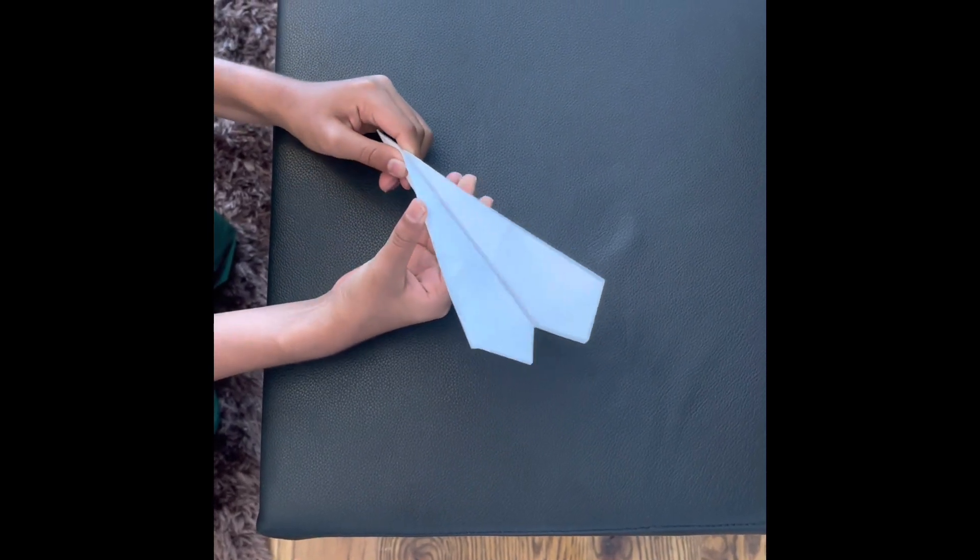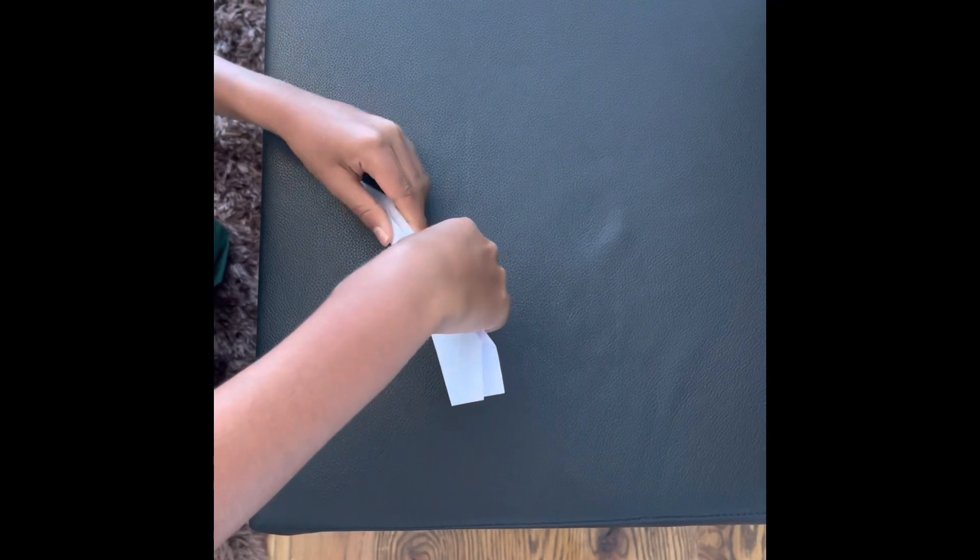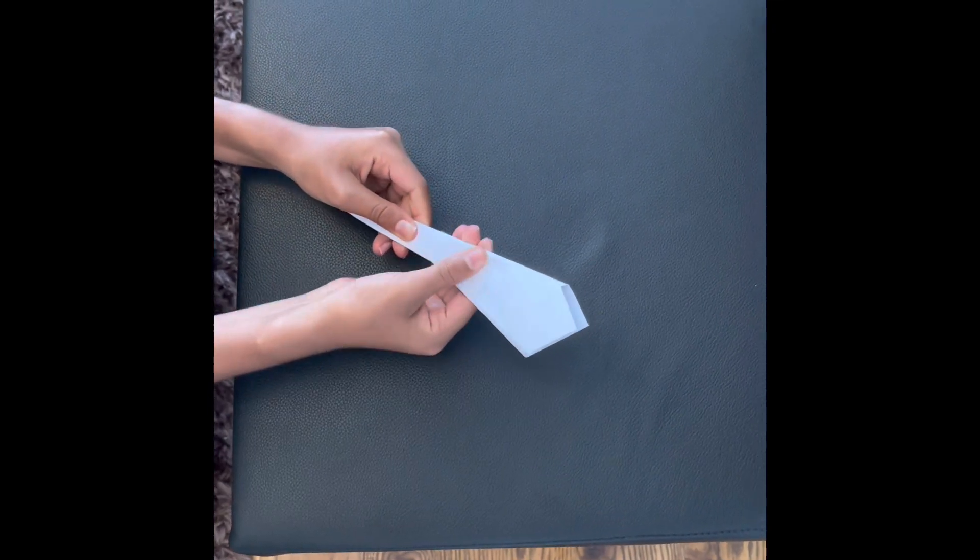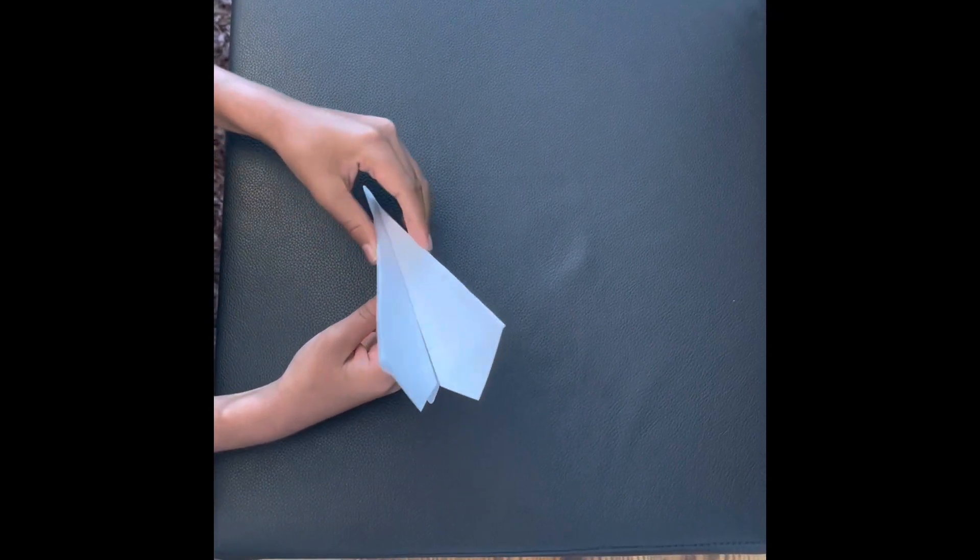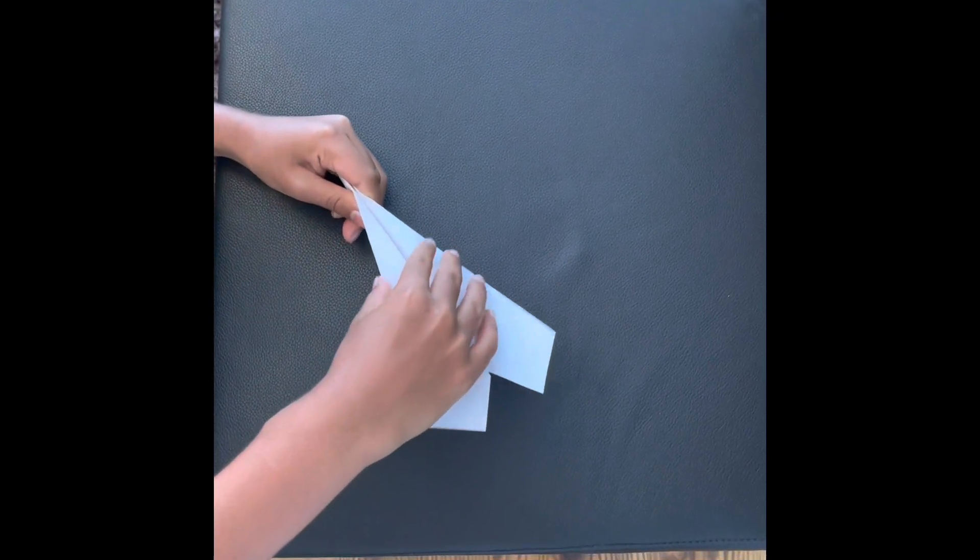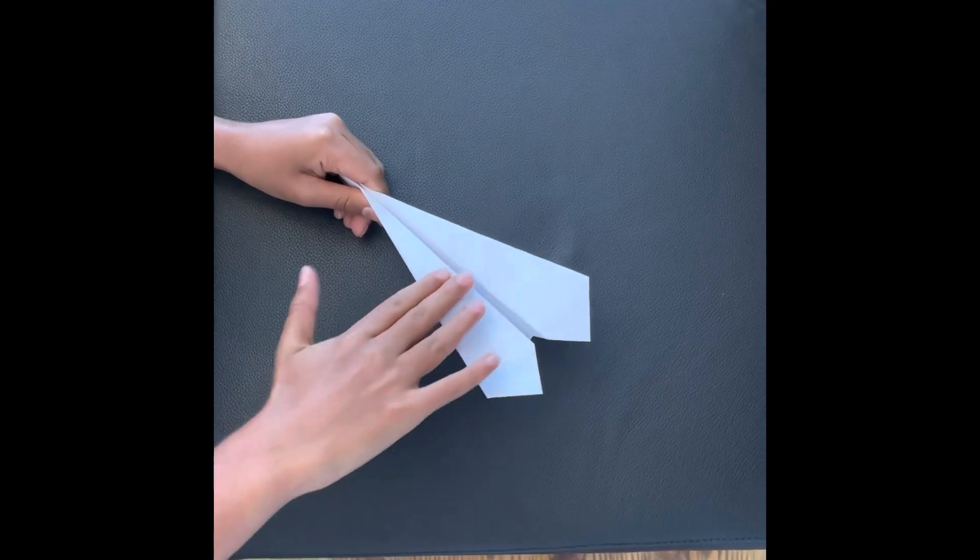Now first off, the joints where your plane wings connect to the plane, you want to crease those real nice and easy. Then you want to adjust the wings so that it's a flat surface right there.